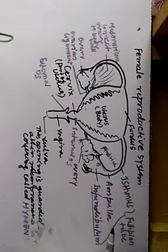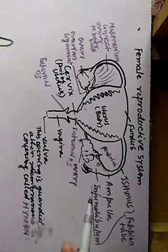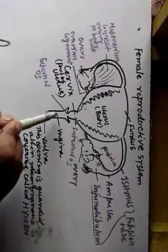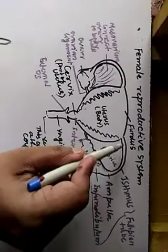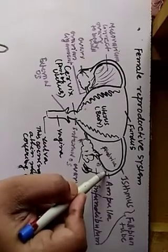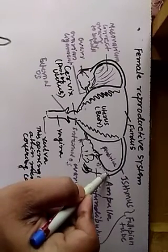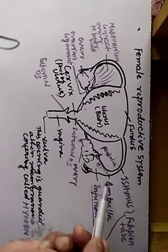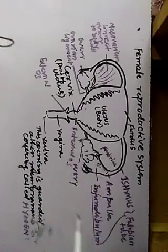Fertilization can also occur at the junction of the isthmus and ampulla — these two are the favorite places where fertilization takes place. Fertilization is the fusion of male and female gametes. During copulation, sperm enters through the vagina, passes through the cervix and uterus — since sperm is a motile structure — and reaches the ampulla region, where it waits for the ovum. Once released, the ovum and sperm fuse to form a zygote, a diploid structure. Fertilization may also take place at the isthmus-ampulla junction.